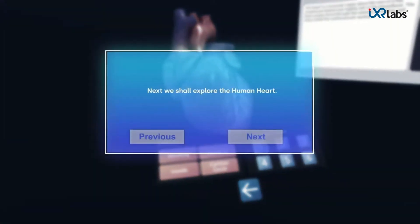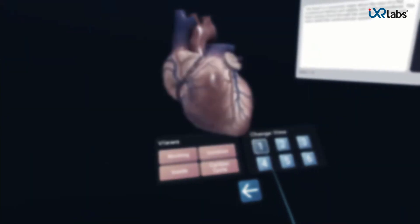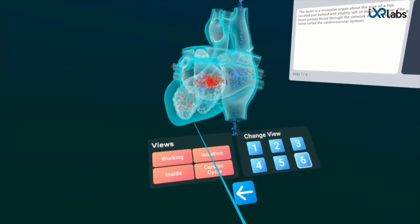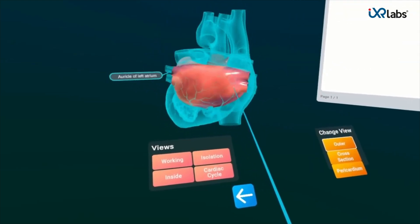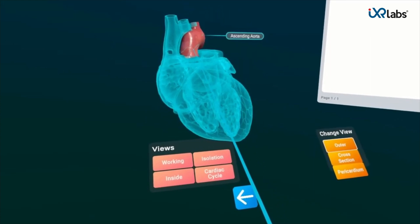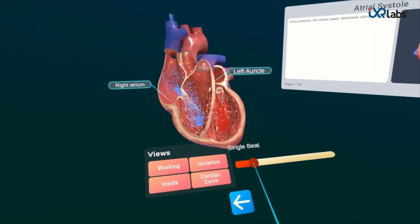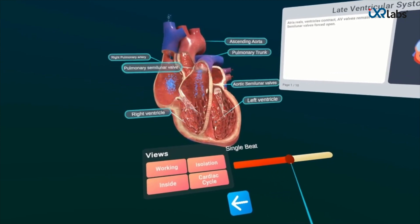Similarly, this is the heart, and we can see its internal working and the various parts involved by changing the view. There is also a cross-sectional view, and we can see the process that takes place during a heartbeat.